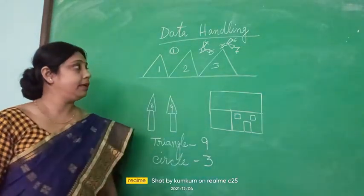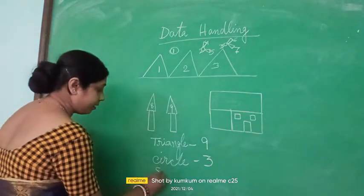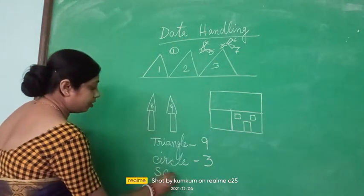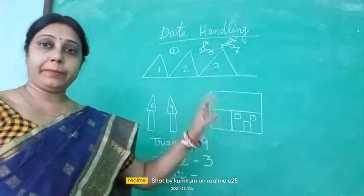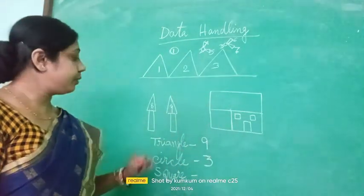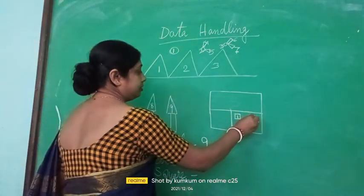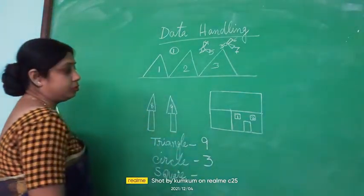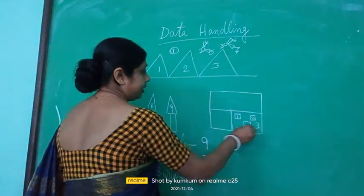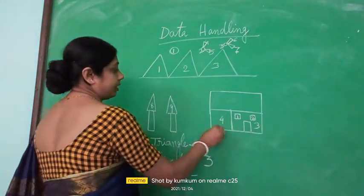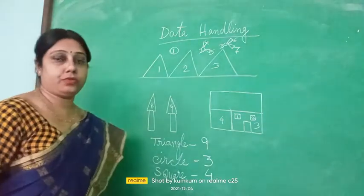Now let us go to the square. All four shapes are drawn in the picture to frame a scenery. How many squares are used here? One and two — so two squares. And this is the big square three, and here the small square four. So four squares are drawn here.